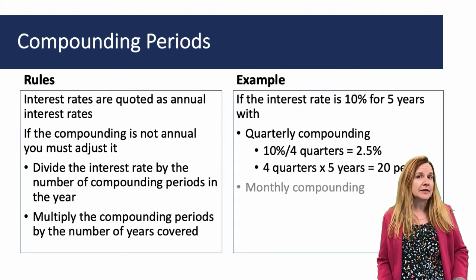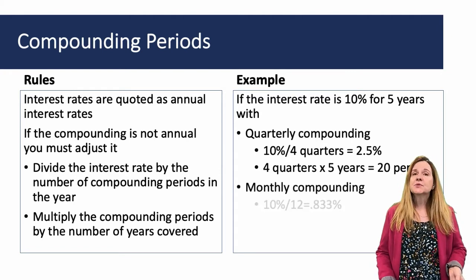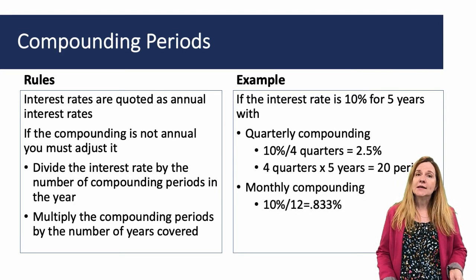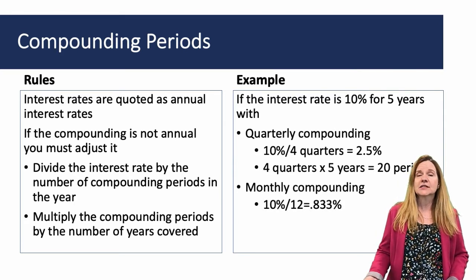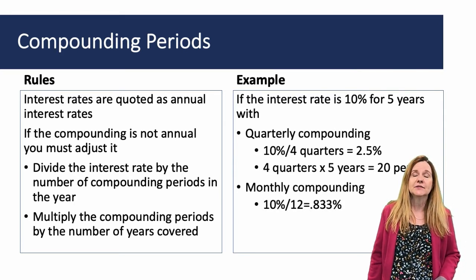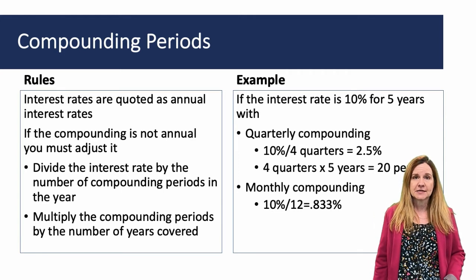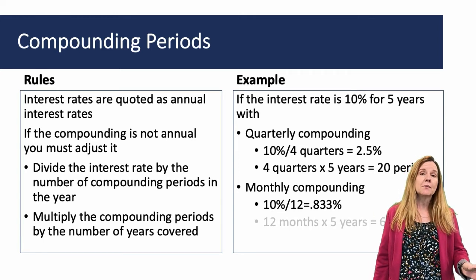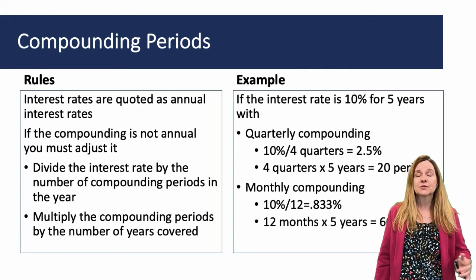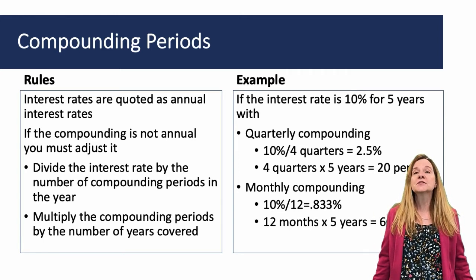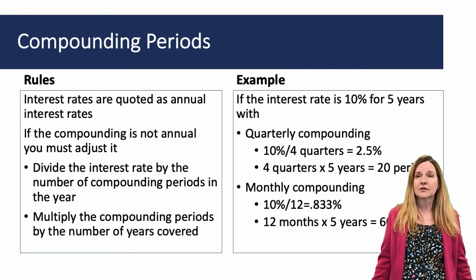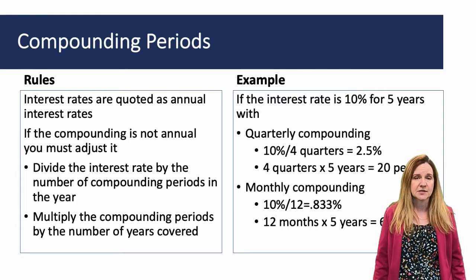Another example is monthly: take the 10% interest rate, divide it by 12 months to get 0.833%. Then take 12 months multiplied by five to figure out how many months are in five years — that would be 60 periods or 60 months.